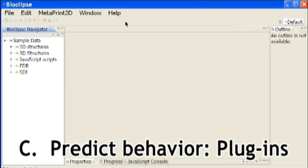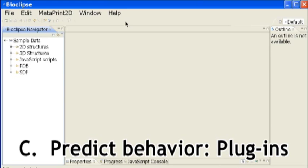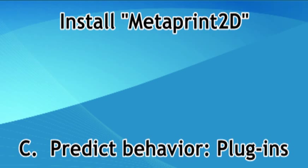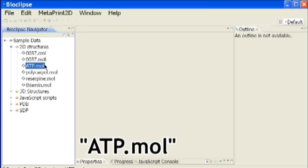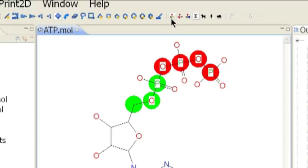From the help software updates feature, after installing Metaprint2D, you can predict metabolic sites. Open ATP.mol and in the upper toolbar click the execute Metaprint2D icon. The highlighted atoms indicate that the terminal phosphate bonds are the most likely to be metabolized.